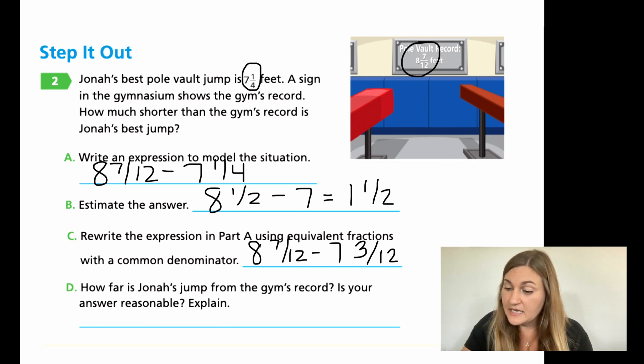For D, it says, how far is Jonah's jump from the gym's record? 8 minus 7 is going to be 1. My denominator is going to stay 12. And then I can just do 7 minus 3, which is 4.